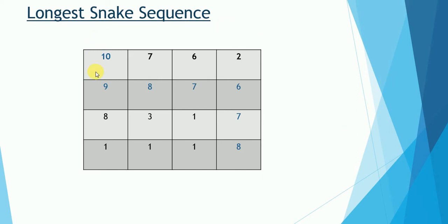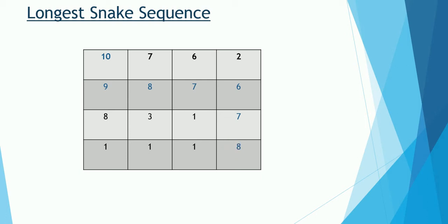It will be more clear once we see this graphic. This is a matrix of integers, and here is the snake sequence — it starts from 10, the number beneath it is 9, which is exactly 1 less than 10. Then we have 8, which is 1 more than 9 and is to the right of 9. Then 7 to the right of 8, then 6 similarly, and then 7 and 8. We need to design an algorithm to find the longest snake sequence from a given matrix.